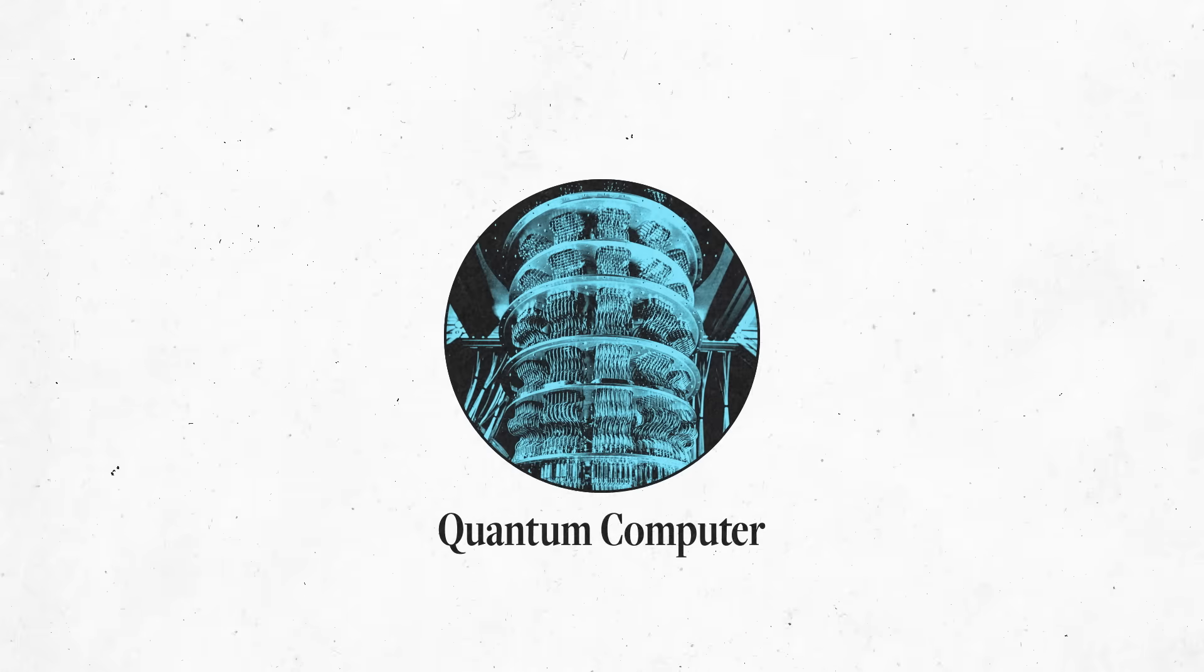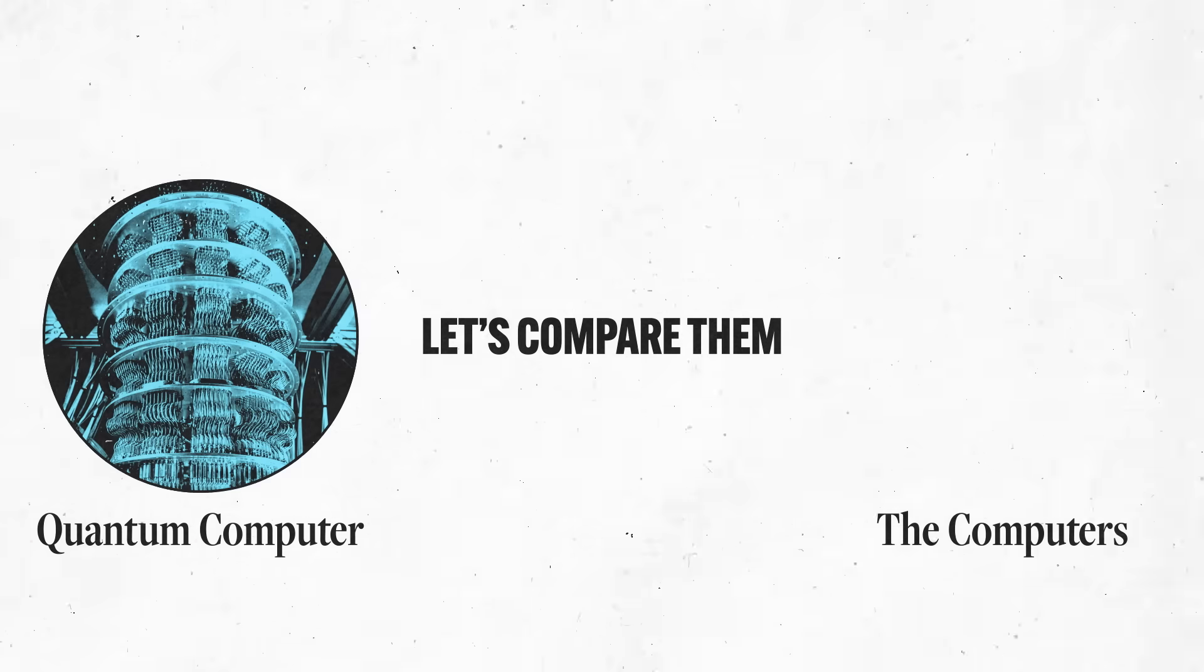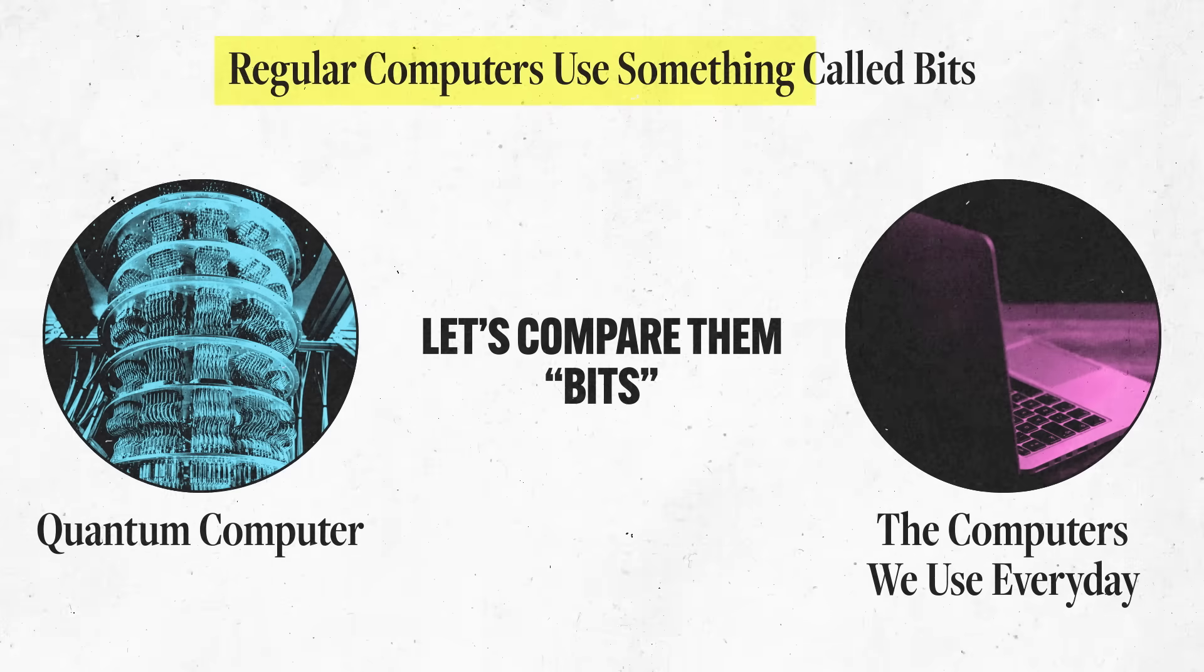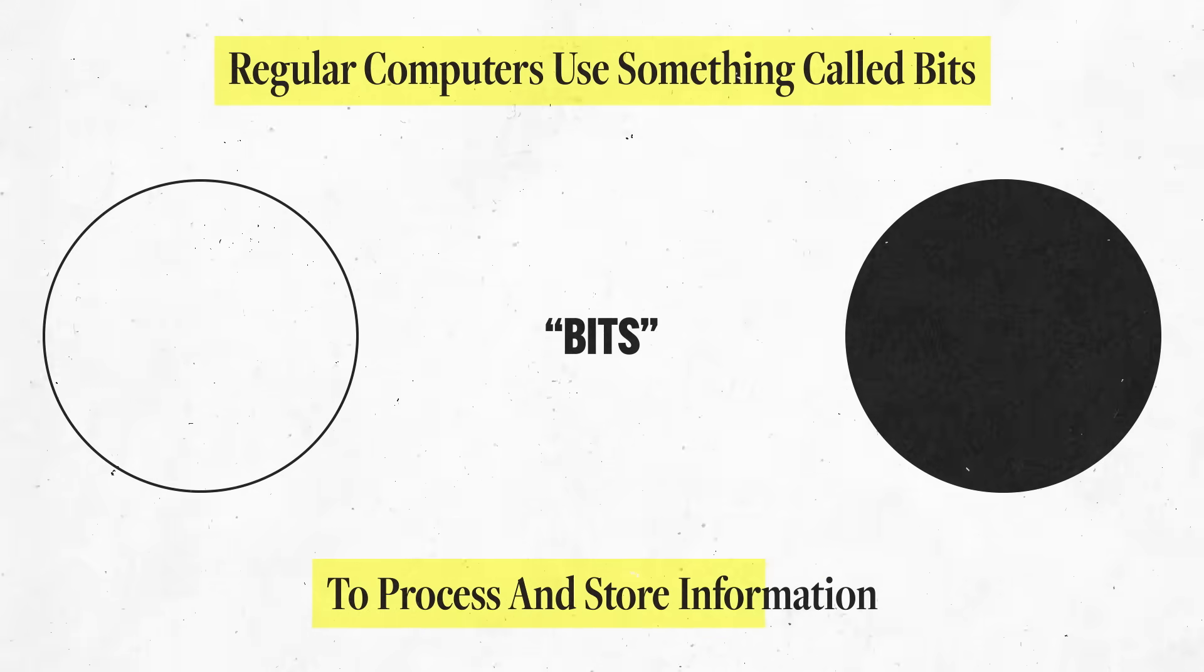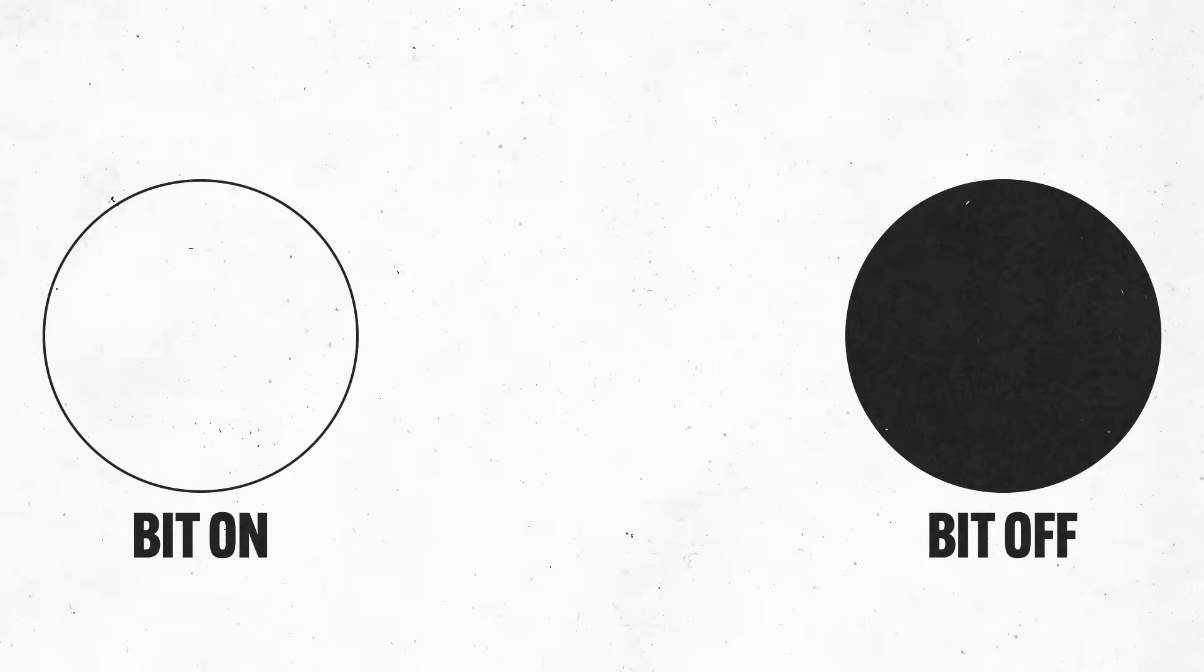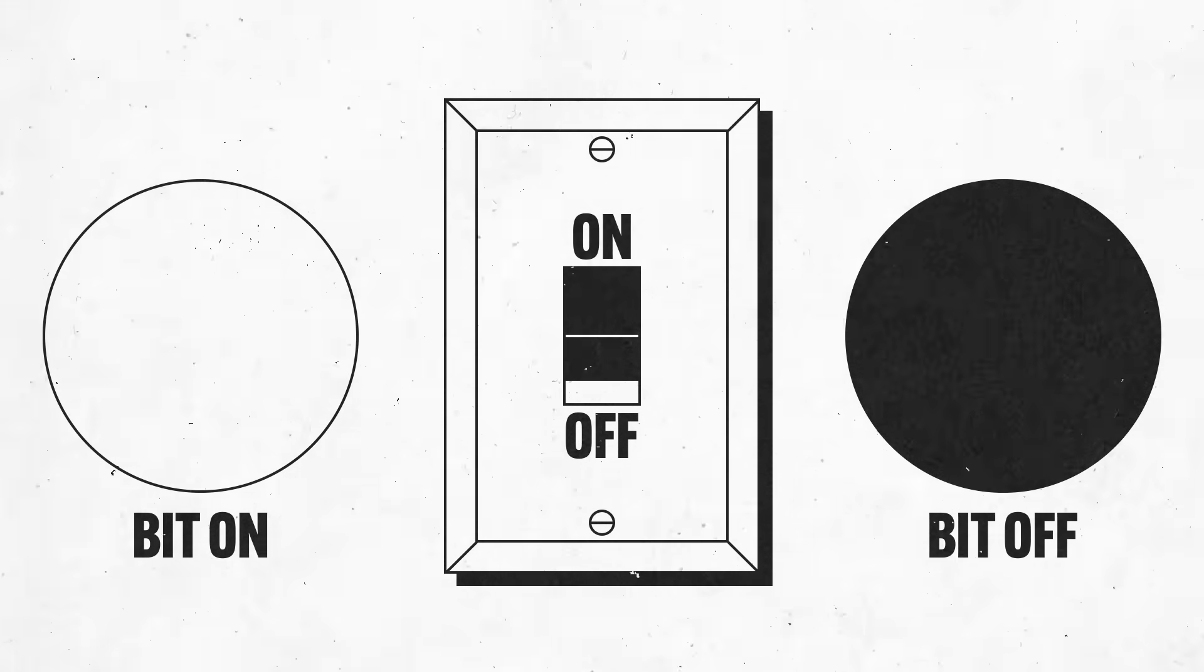To understand how quantum computers work, let's compare them to the computers we use every day. Regular computers use something called bits to process and store information. Think of a bit as a tiny switch that can either be in the on position or the off position, like a light switch that can be either up or down.